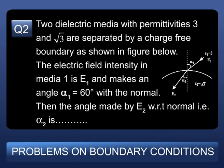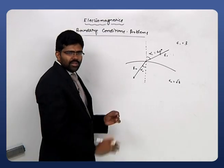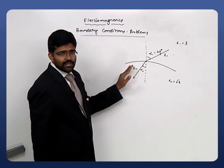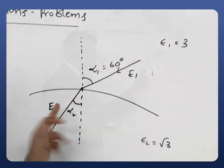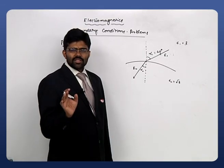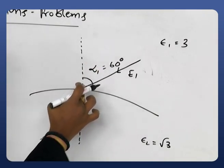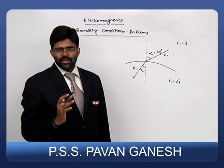Problem 2: Two dielectric media with permittivities ε₁=3 and ε₂=√3 are separated by a charge-free boundary. The electric field intensity in medium 1 makes an angle α₁ = 60° with the normal. Find the angle α₂ made by E₂ with respect to the normal. The electric field travels from one medium to another, and at the boundary it undergoes refraction. α₁ is the angle of incidence and α₂ is the angle of refraction.